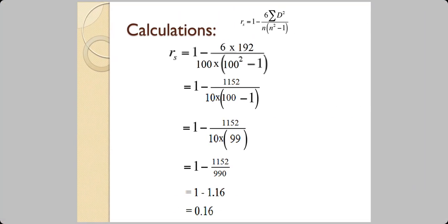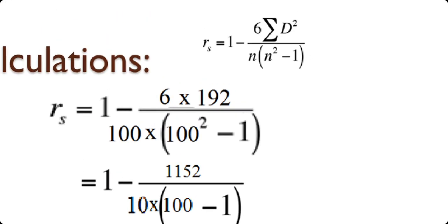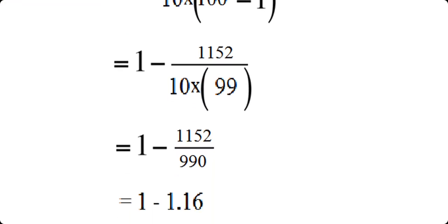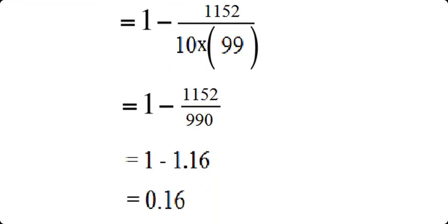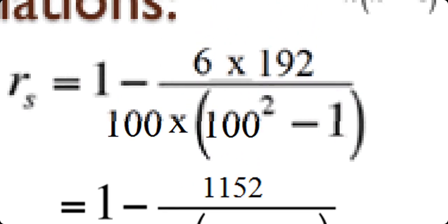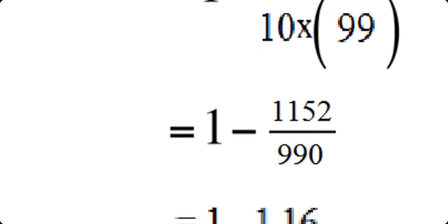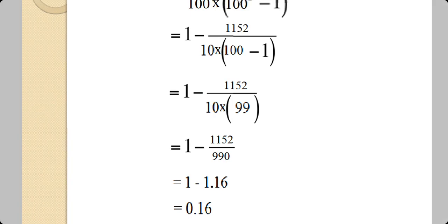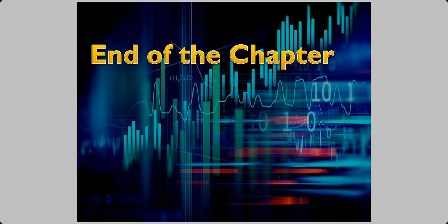Substitute into the formula: ρ = 1 − (6×92) / (10×(100−1)) = 1 − 552/990. Solving gives 0.16. Important: do not forget the final step of subtracting from 1 — it is easy to get preoccupied with the larger calculation and omit this, which will make the answer wrong. So ρ = 0.16. This is the end of the chapter.